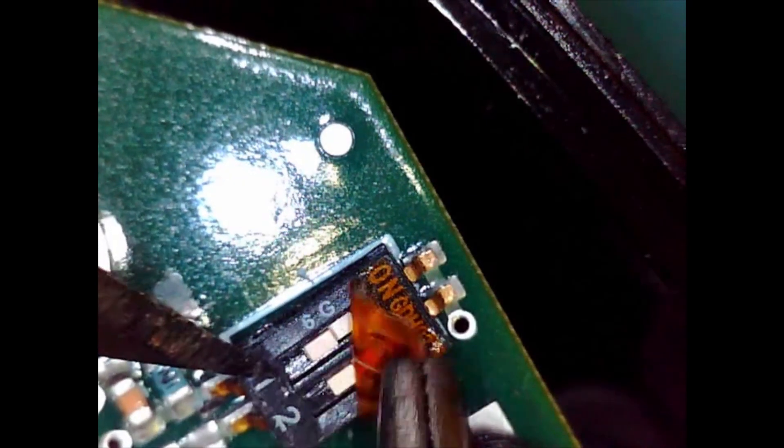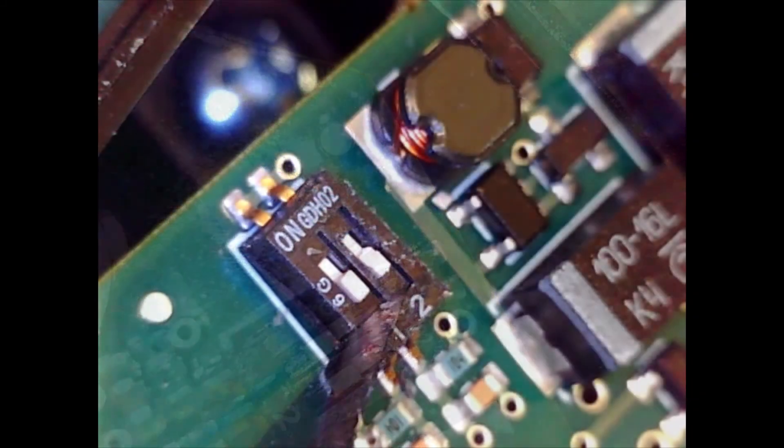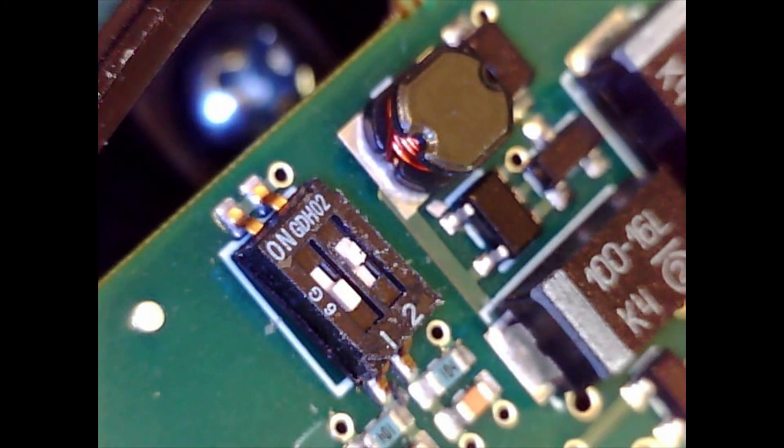You may need to remove a small piece of tape before you can change the dip switch positions. Move switch number two to the ON position.